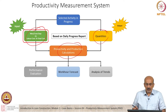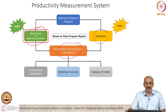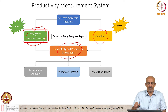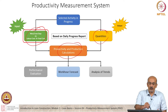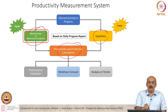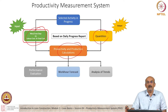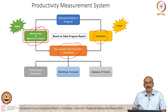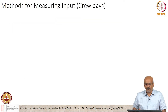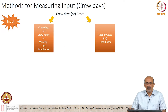Looking at productivity and production, there are two basic inputs. We have man days, labor cost, crew days, or total cost input on the input side, and the output is the quantity of material. These are the components of both productivity and production. For inputs, we have many alternatives: crew days, crew hours, man days, man hours, labor cost, or total cost.